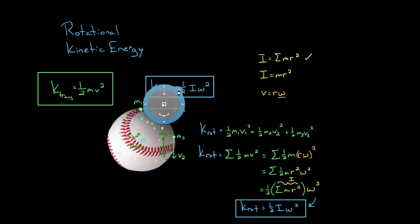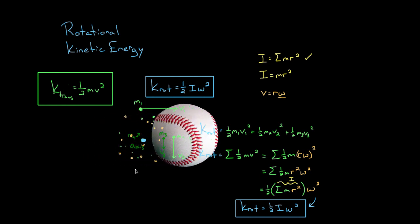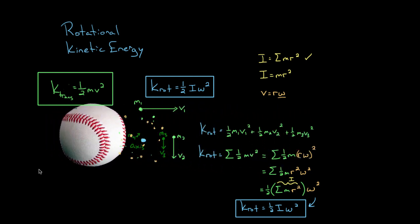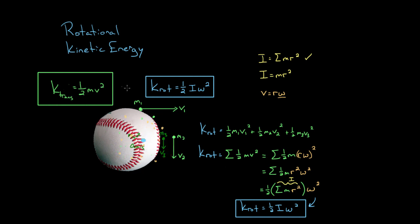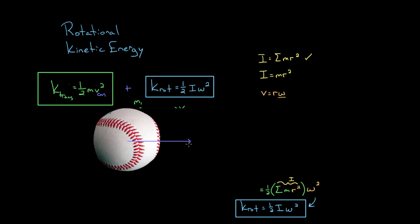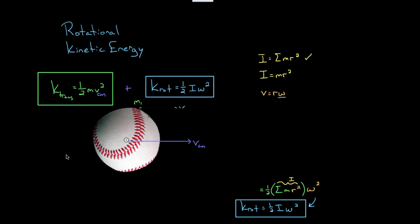If an object is rotating, it has rotational kinetic energy. If an object is translating - if the center of mass is moving - it has translational kinetic energy. If the object is both translating and rotating, it has both at the same time. The total kinetic energy is just one-half m times the speed of the center of mass squared, plus one-half I omega squared about the center of mass. You simply add these two terms together.